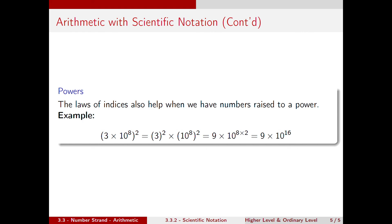The laws of indices also help when we have numbers raised to a power. If we take 3 times 10 to the 8, all squared, we distribute the power of 2 into the number: 3 squared times 10 to the 8 all squared. This gives us 9 times 10 to the power of 8 times 2 using the laws of indices, which is equal to 9 times 10 to the 16.